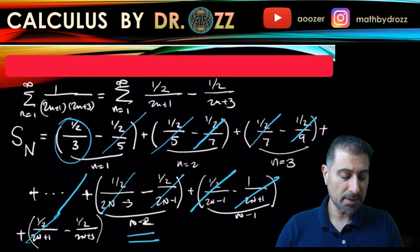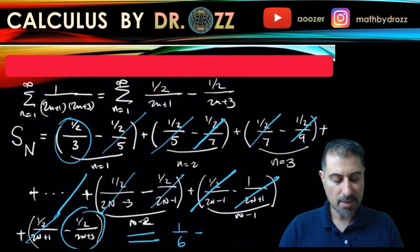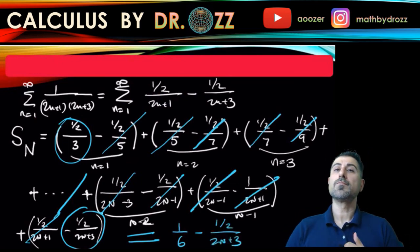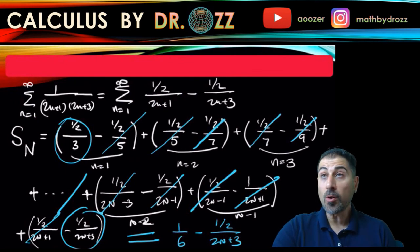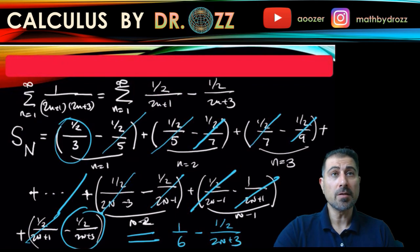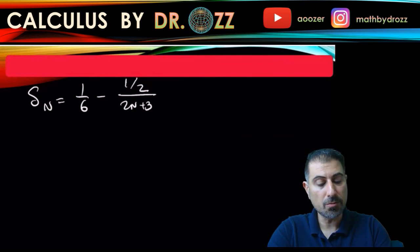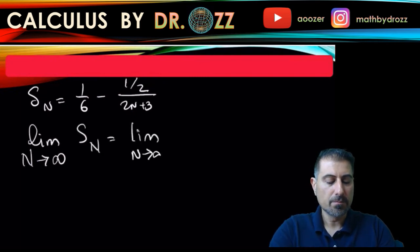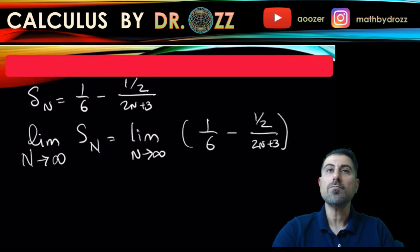After cancellation, the partial sum S_N simplifies to just the first surviving term, 1/2·(1/3) = 1/6, minus the last surviving term, 1/2·(1/(2N+3)). So S_N = 1/6 - 1/(2(2N+3)). Now we take the limit as N approaches infinity.